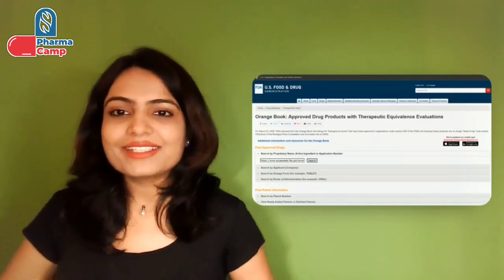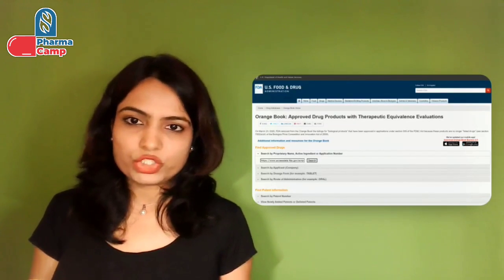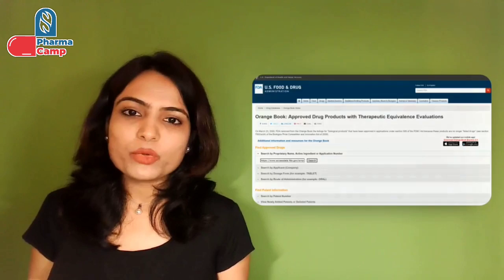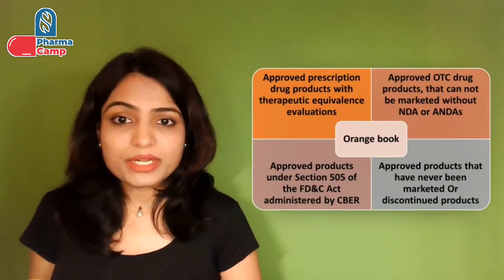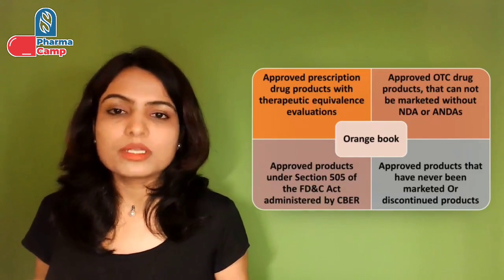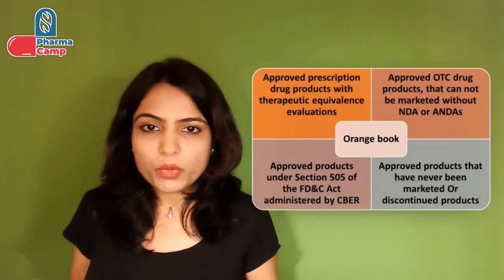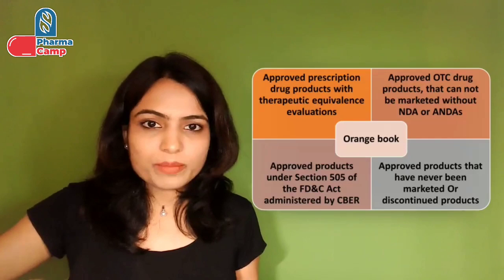When you search in this online database, this is how the information looks. Then comes the orange book. The purple book was for biologicals, but the orange book is a list of all generic drugs approved by the FDA. Earlier this list was known as 'Approved Drug Products with Therapeutic Equivalence Evaluations.' It contains information such as the brand name, drug patents, and drug exclusivity.